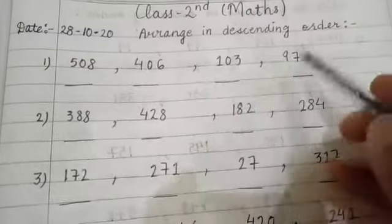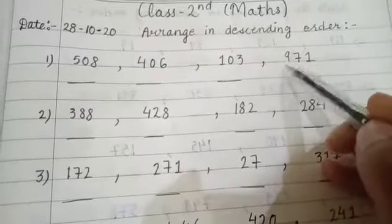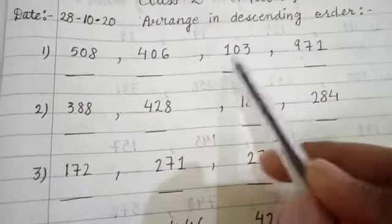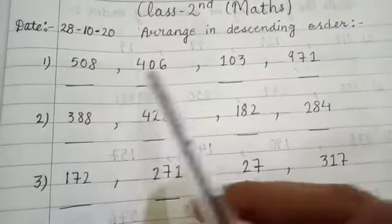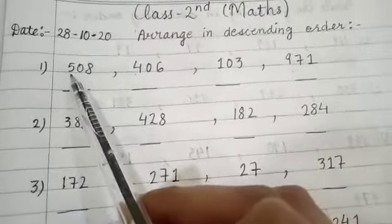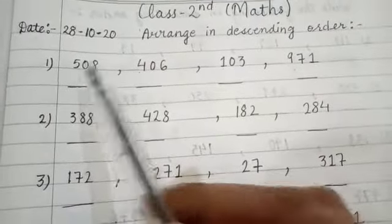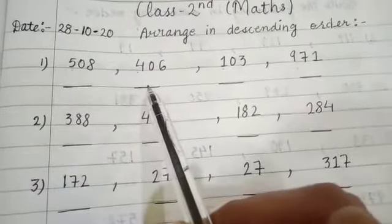Then the smallest number from this. Now this is already done, we will cancel this, then we will have three numbers. What will the next number be? 5, 4, or 1? 5 is the biggest, so this number, 508, will be the second number.